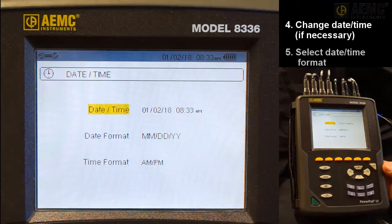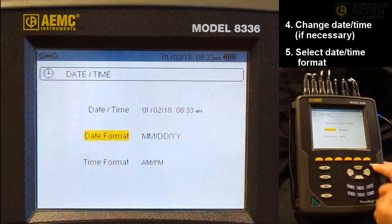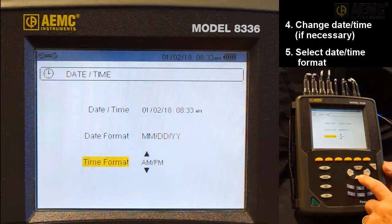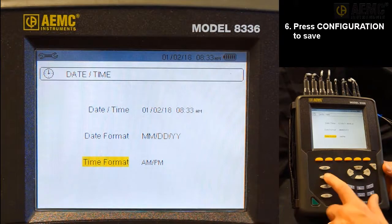The Date Time screen also lets you select the date and time formats. To change these, use the arrow and Enter buttons to highlight, select, and change the settings. When finished, press the Configuration button to return to the Configuration Options screen.